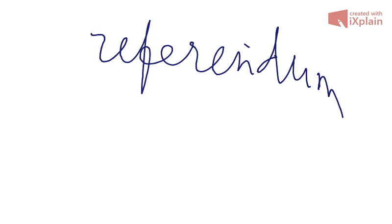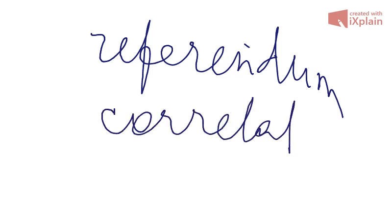Number nine is correlation. Correlation means the connection, the link, the relationship between two or more things.